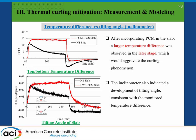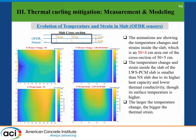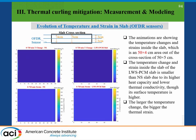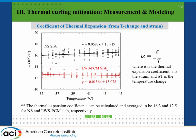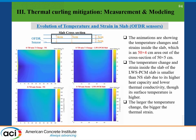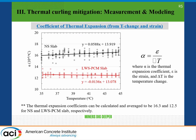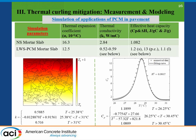The larger temperature difference means more severe curling. The first figure shows temperature difference: the PCM-loaded slab leads only in the first hour, after which the temperature difference is always larger during the heating process. The inclinometer data confirms: the tilting angle is much larger in the PCM-incorporated slab. Fiber optic sensors monitor both temperature distribution and thermal strain; from this data we calculate the coefficient of thermal expansion for both mortars by plotting strain over temperature change, and use these values as inputs for FEM modeling.